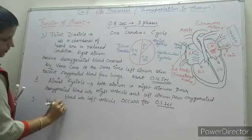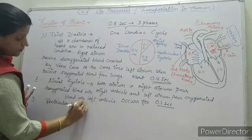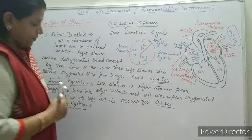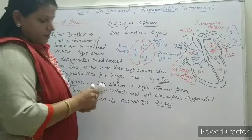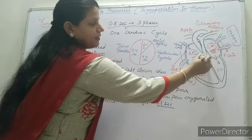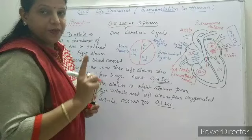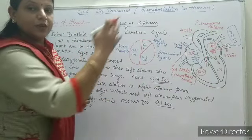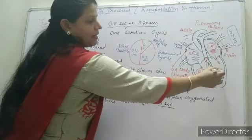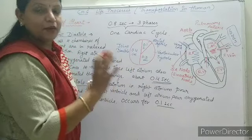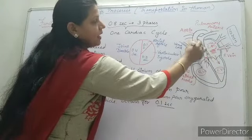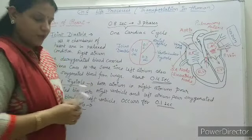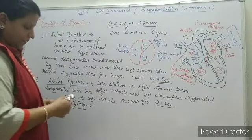The next phase is ventricular systole, in which the ventricles start contracting. During ventricular contraction, blood from the right ventricle enters into the pulmonary artery and is carried to the lungs for oxygenation. At the same time, the left ventricle also contracts and pours oxygenated blood into the main artery — the largest artery of the body — that is the aorta. From there, oxygenated blood gets supplied to different parts of the body.